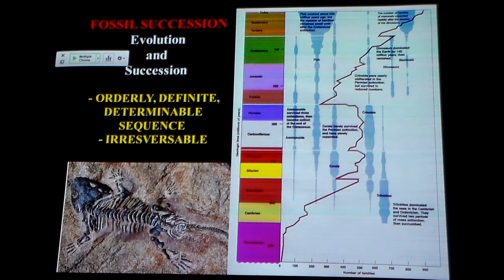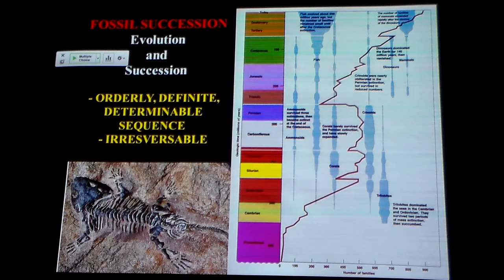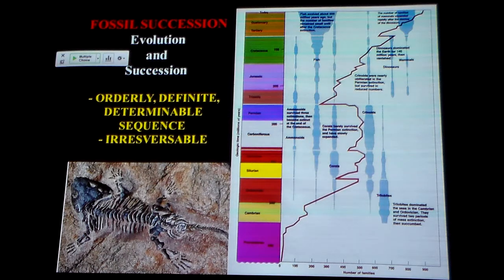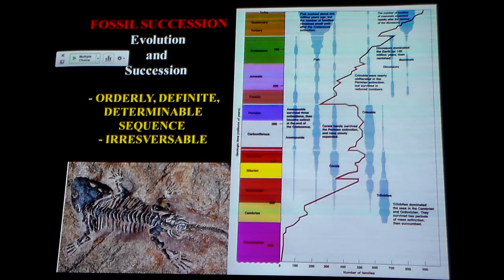Fossils are nothing more than the preserved remains of past life, and only about 1% of life ever gets preserved in any way. We base fossil dating on the fact that fossils are evolving and changing in an orderly way. We assume the sequence of this evolution is determinable — that it's ordered, we can figure it out, and it goes from simplicity to complexity. Being Michigan, I kind of have to use a car analogy here — look at Henry Ford's Model T and look at a car today. Today cars have more computing power than the first Apollo 11 moon-landing spacecraft. We expect this to be a determinable, orderly sequence, and the other caveat is it's irreversible.